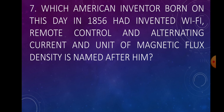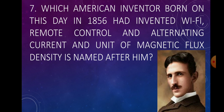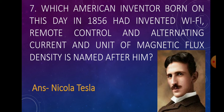Question number 7: Which American inventor born on this day in 1856 invented Wi-Fi, remote control, and alternating current, and the unit of magnetic flux density is named after him? Answer: Nikola Tesla. The unit of magnetic flux density is named after him as Tesla.